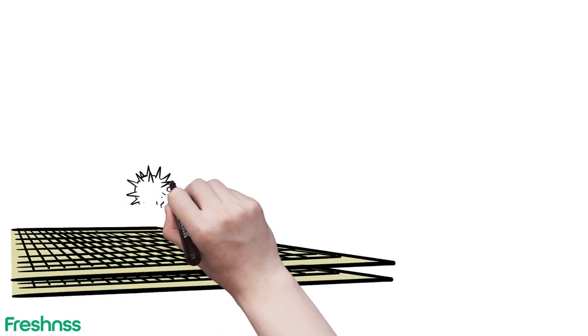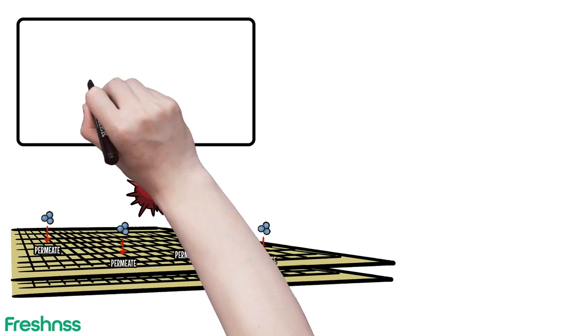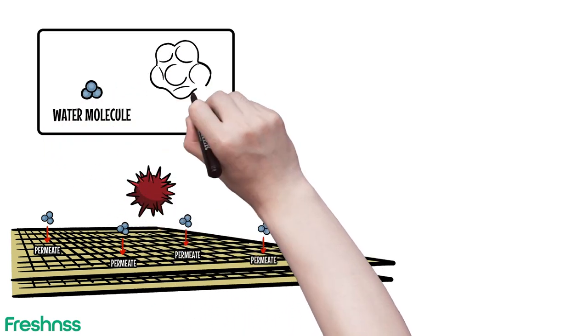Membranes remove molecules based on size, charge, and shape. When molecules larger than water molecules are separated and removed, it creates two streams of water.